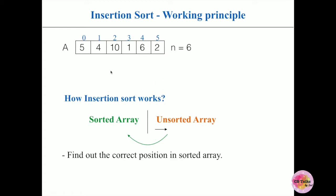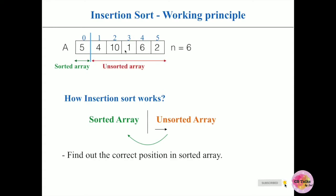Going back to our example array: the first step is to divide the array into sorted and unsorted parts. By default, the first element a[0] is considered as the sorted array, and from the second element onwards — index one to five, which is less than n — everything is considered as the unsorted array. We need one loop for this. A single element is always sorted, so a[0] is always considered as the sorted part.